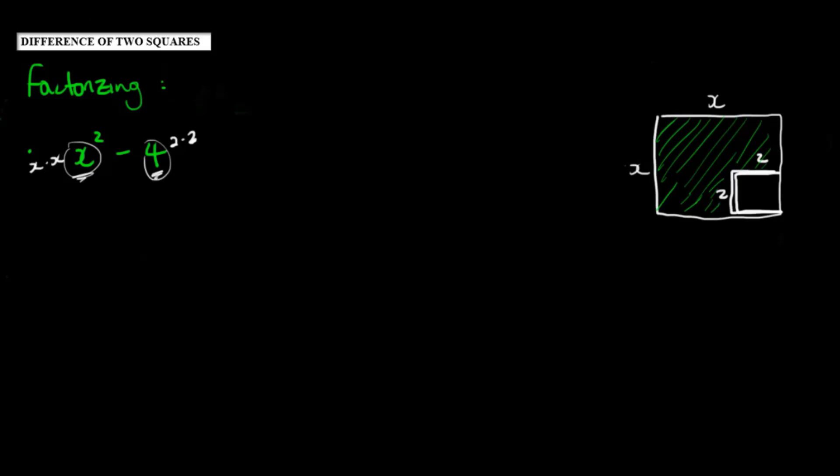Now if I were to factorize that, I'm basically looking for two numbers that multiply to give me negative 4 and two numbers that add to give me the coefficient of x. But the thing about it is that there's no x term here.